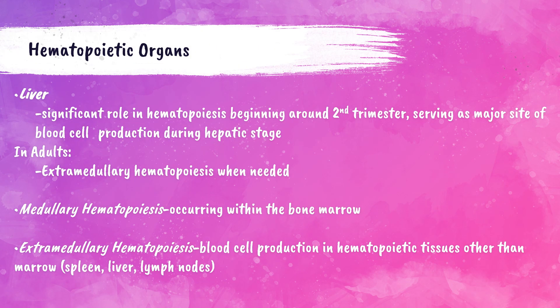Now that we've talked about the different types of hematopoietic cells in the marrow, let's talk about the different types of hematopoietic organs. The adult hematopoietic tissues are the bone marrow, the lymph nodes, the spleen, the liver, and the thymus. We've already discussed the bone marrow, so let's move on to these other hematopoietic organs.